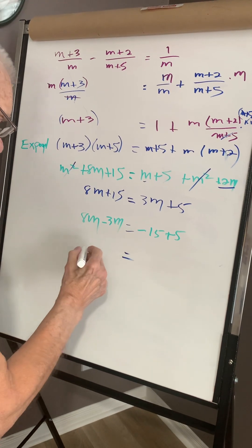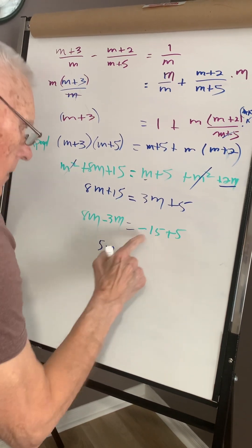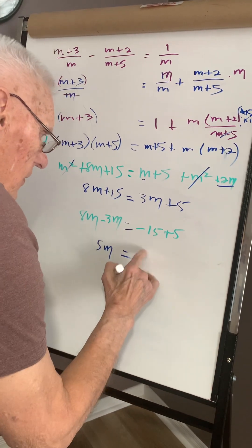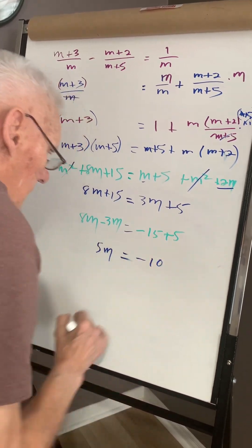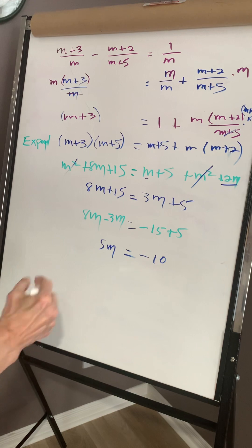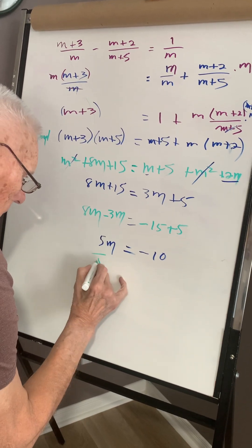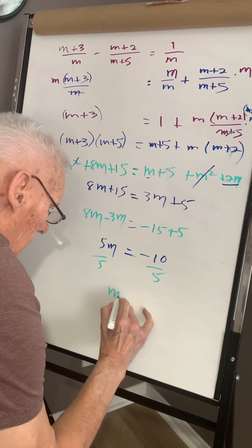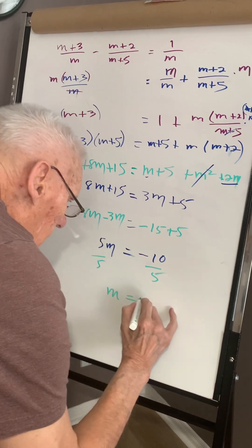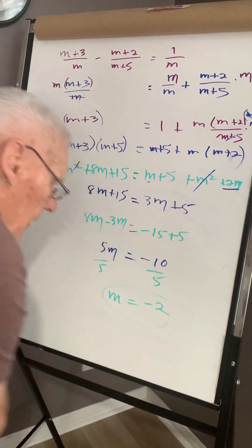Collect like terms, five m, subtract, and this is negative ten. Divide both sides by five, and m is negative two.